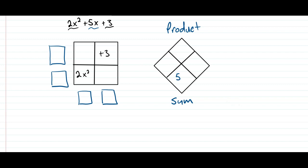I'm going to put the 5x down here and now the product, I'm going to multiply these two numbers, the 2x squared and the 3. 2x squared times 3 is 6x squared, right?